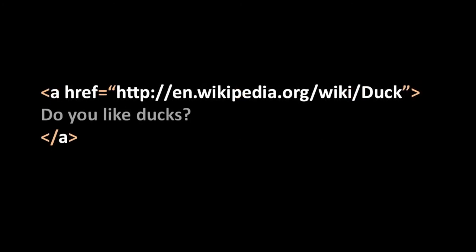Here's an example tag. HTML has a tag called A, standing for anchor, which is what HTML calls a hyperlink. So this tag is creating a link. The name of the tag, A, is written both in the opening tag and the closing tag. In between, we have some content — the text "do you like ducks" — and in the opening tag there's one attribute, href, with a URL value: http://en.wikipedia.org/wiki/Duck.